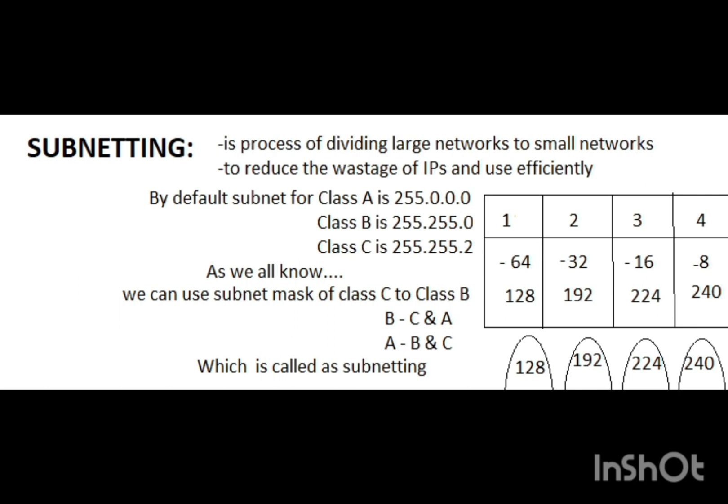By default, the subnet mask for Class A is 255.0.0.0, for Class B is 255.255.0.0, and for Class C is 255.255.255.0. We can also use the subnet mask of Class C applied to Class B and Class A, and similarly Class B subnet mask to Class A — which is also called subnetting.